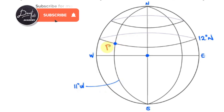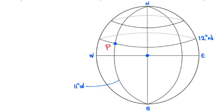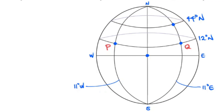In the same way, point Q is on the same latitude as P — 12° North — but its longitude is 11° East. The intersection of 11° East and 12° North gives us point Q. Then from Q, the aircraft changes course to point S, which is on latitude 44° North and longitude 11° East. Notably, Q and S share the same longitude, 11° East, but S is further north at 44°. The intersection of 11° East and 44° North is point S.